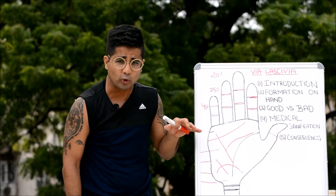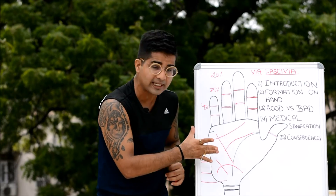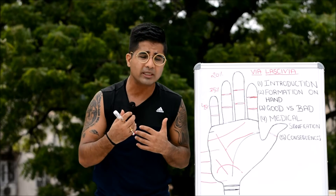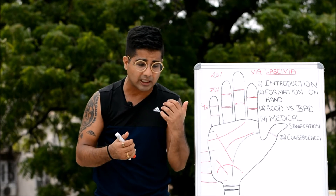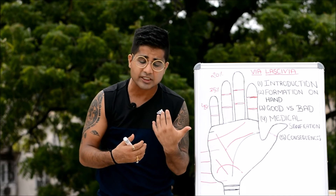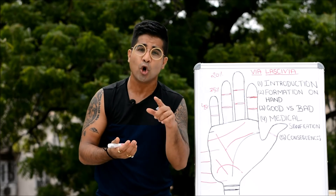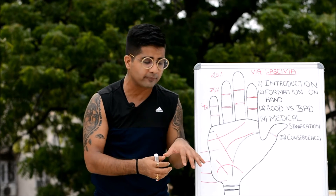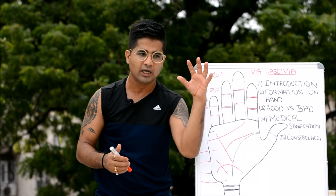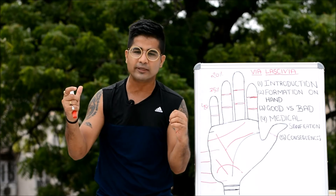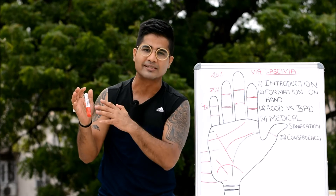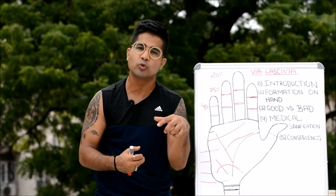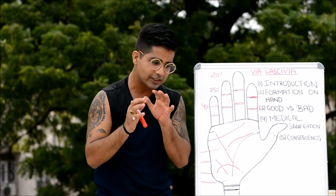Next comes the medical signification of via lascivia. What has been found true in research is that people with this kind of via lascivia formation remain very much sensitive towards different kinds of allergies — whether being allergic to alcohol, drugs, or medication, or remaining vulnerable to hypoglycemia, which is low blood sugar. So there is one side of via lascivia where the person becomes an addict, and there is another side where the person becomes very intolerant and allergic towards all these things. The majority of people with via lascivia remain vulnerable to one or another form of allergy.